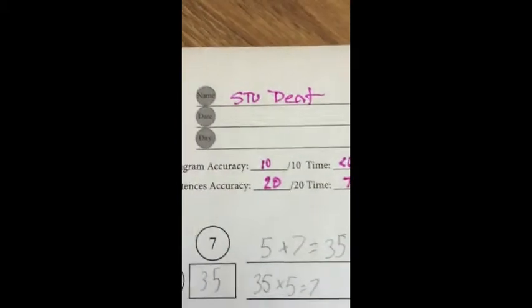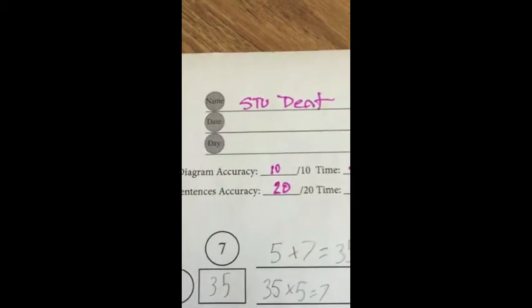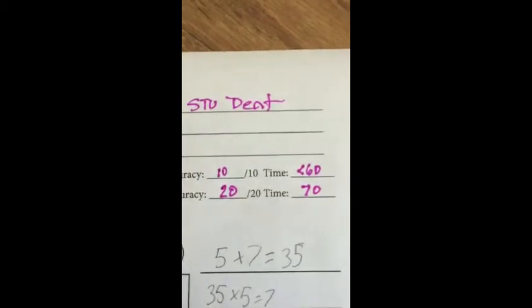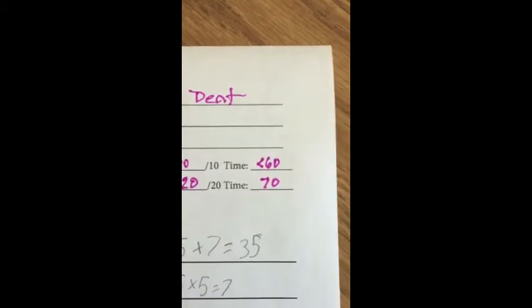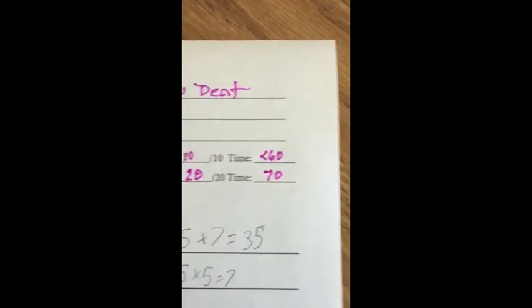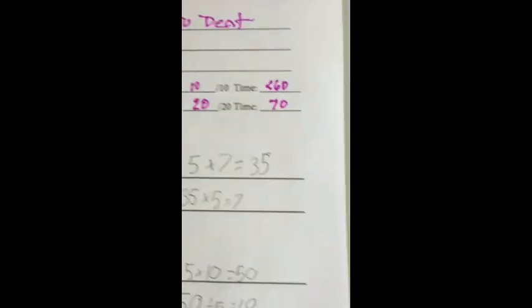This student here got 20 sentences correct out of 20 in 70 seconds, which is quite a speedy time. Just a little bit over a minute. Nice job. I'm going to record this data on the tracking sheet.